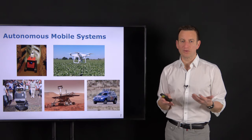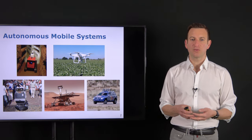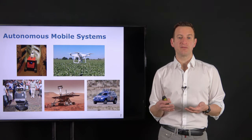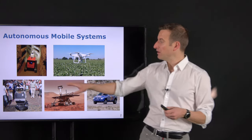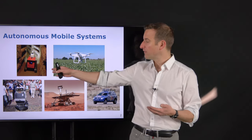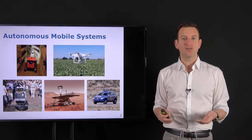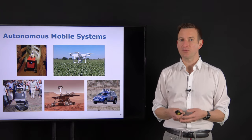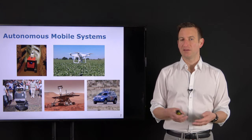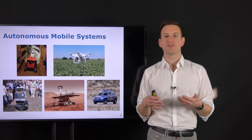What are robots or intelligent systems? In this course we refer to mobile systems — systems that can move through the environment. This can be systems which drive through the environment with wheels or track-based systems, actuating their motors to move and equipped with sensors in order to perceive the environment.